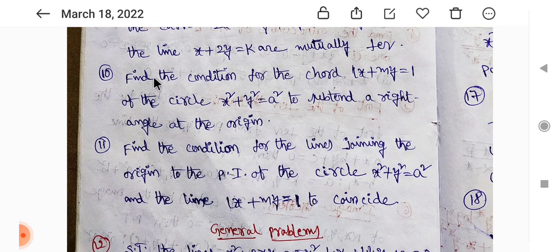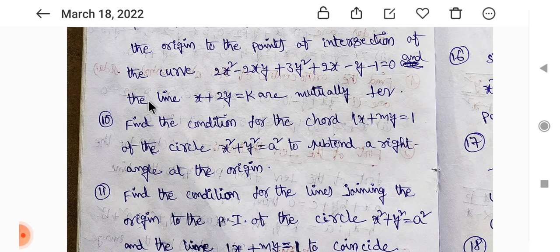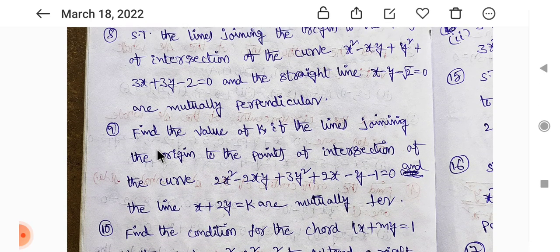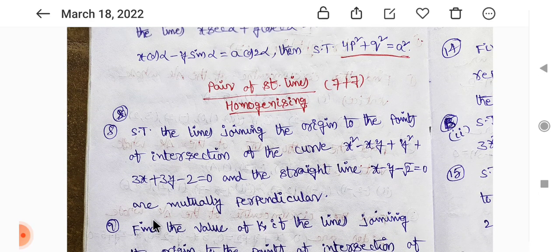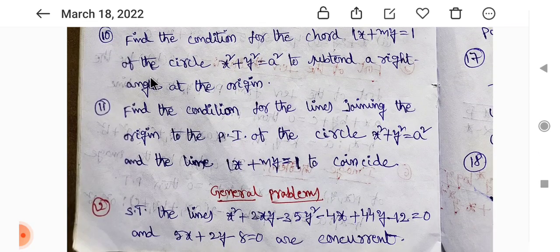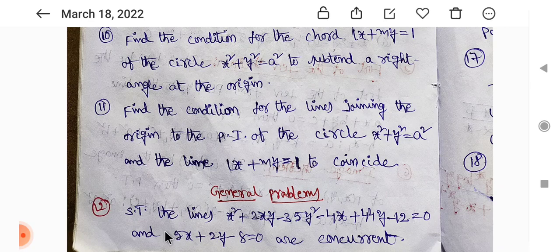This is the same model. Problems 8, 9, 10, 11, 12. 5 minus 1. General problems - as the same values are left.